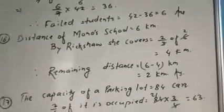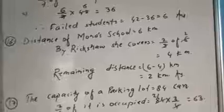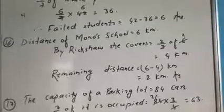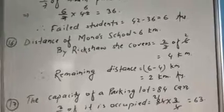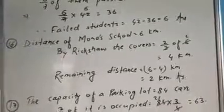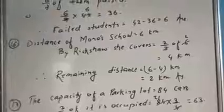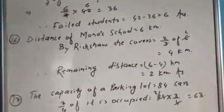That means the rickshaw covers 4 km. Now the remaining distance she covers on foot. Total distance is 6 km, rickshaw covered 4 km, so the remaining distance is 2 km. Okay students.